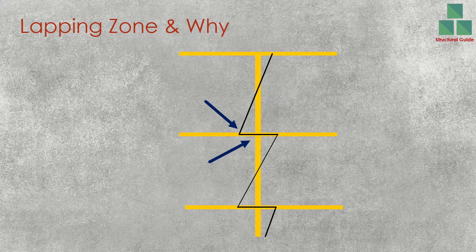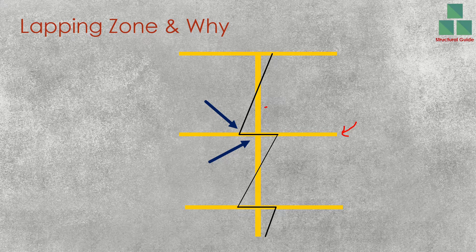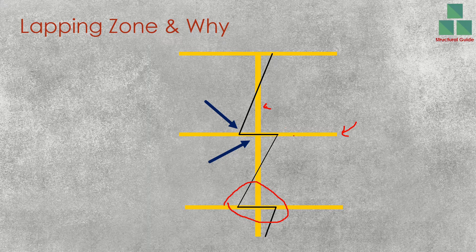As you can see in this figure, the bending moment variation is shown in black. This is the bending moment diagram. The bending moment is high at the support — this is the beam and this is the column. Bending moment is high at the support. It is common practice to provide the lap close to the beam-column joint, that is above the beam, we provide the lap here.